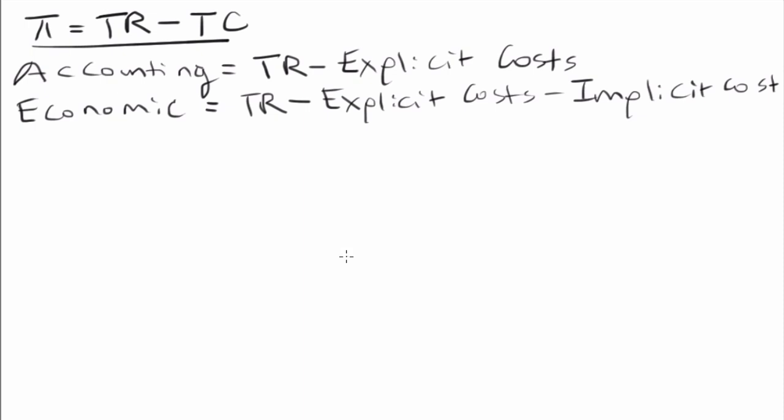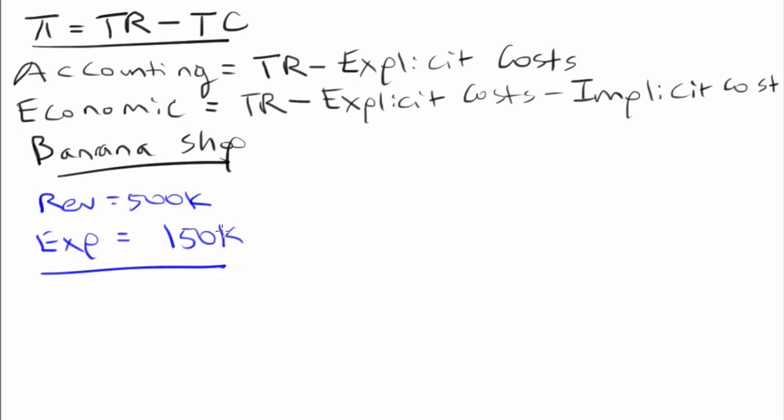And so this leads to a difference when we apply it to an example. If you're an Arrested Development fan, you might be considering opening a banana shop. Let's say that you are opening a banana shop and you're thinking about the potential here. You might say that your revenue would be $500,000 a year and your explicit costs are $150,000. An accountant would say that's great because $500,000 minus $150,000 is $350,000. So clearly this banana shop is a great opportunity because this is a very profitable venture.